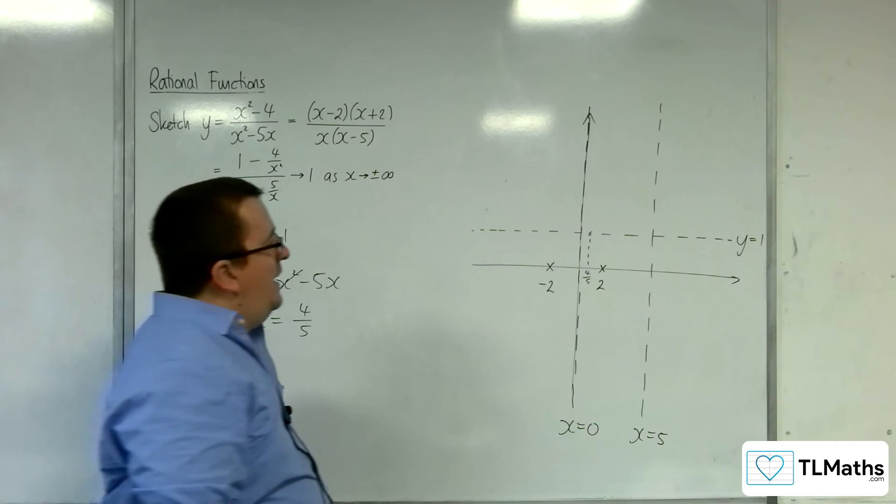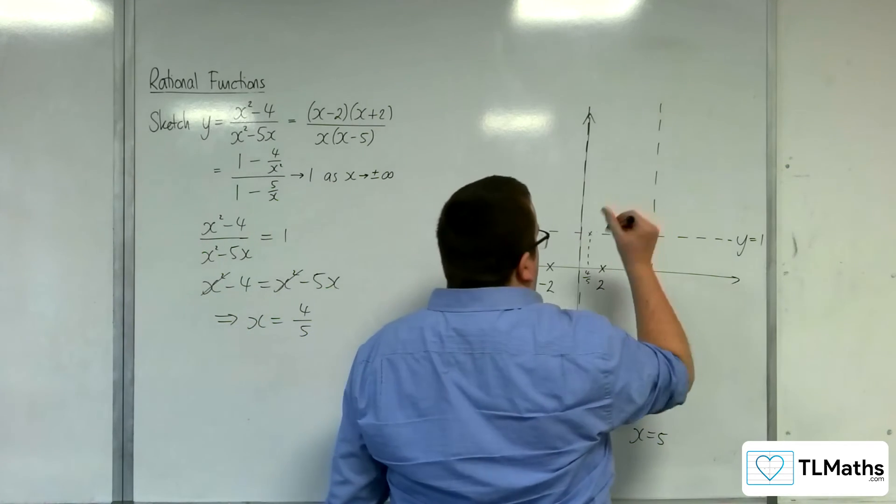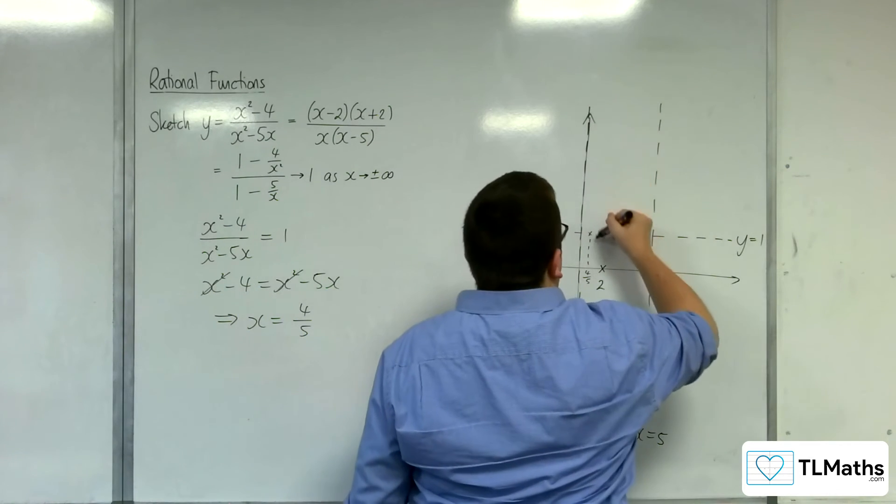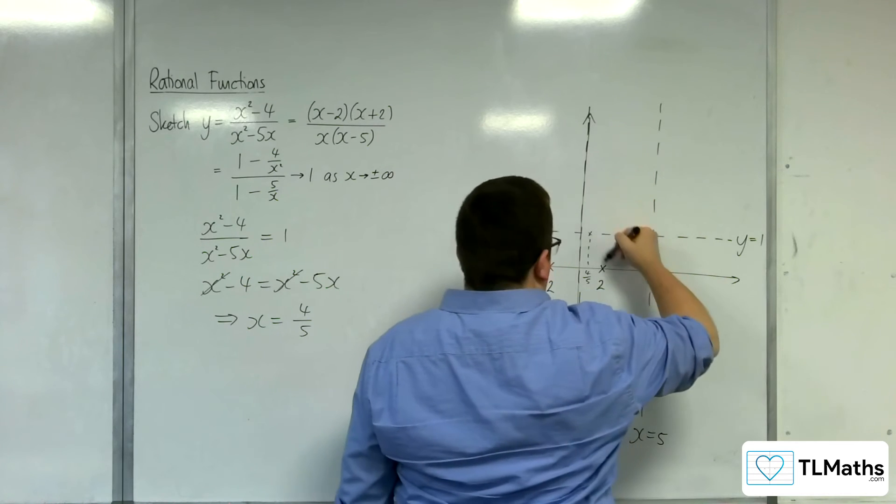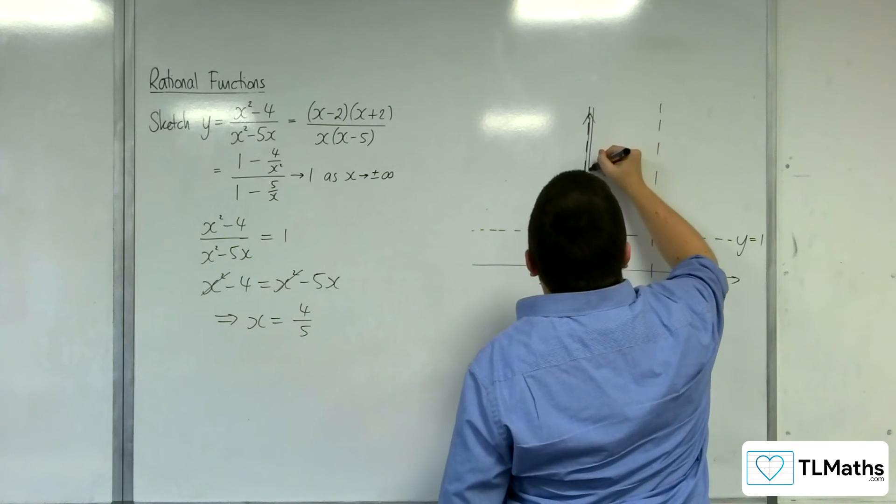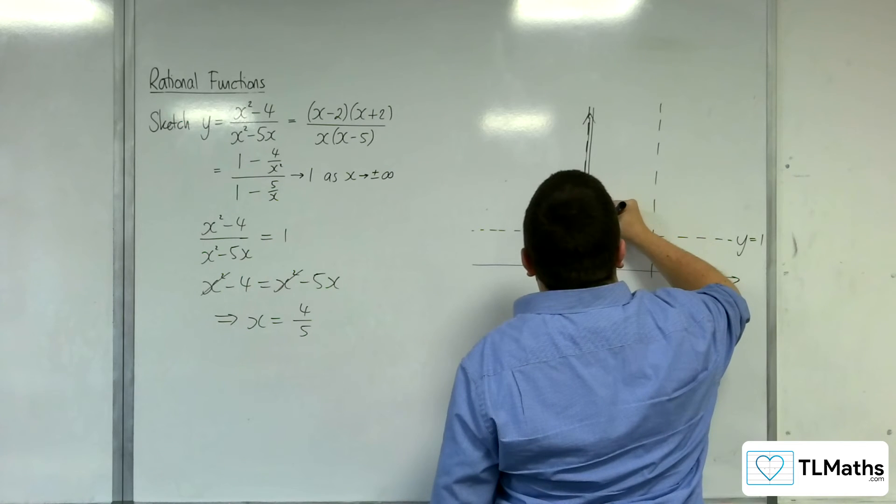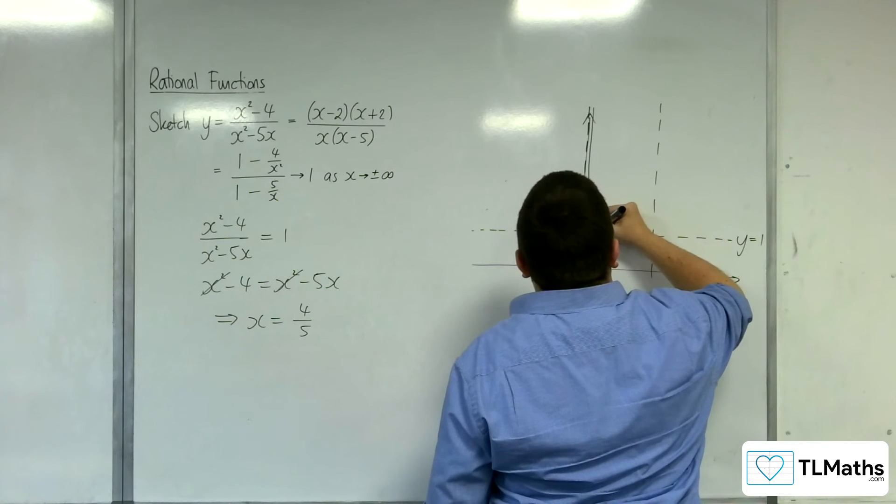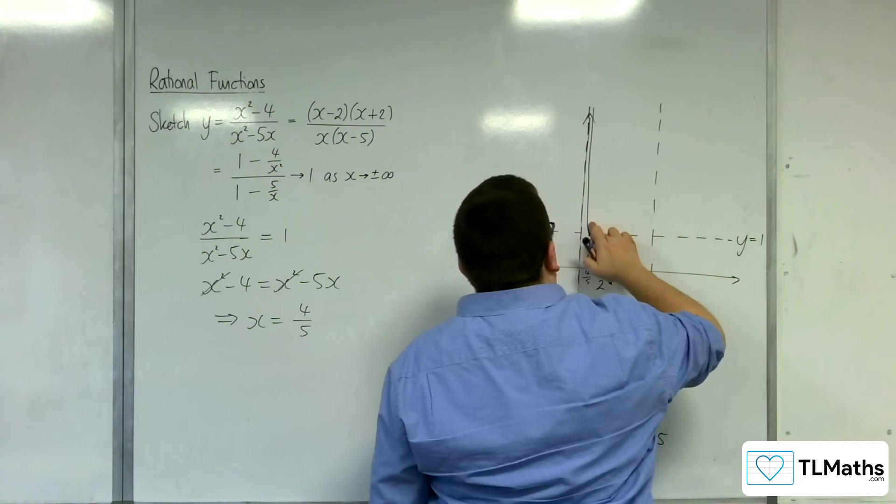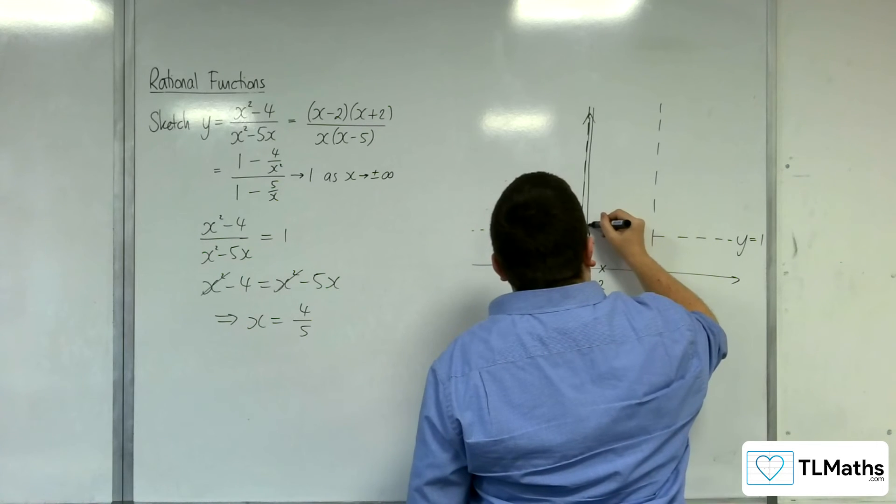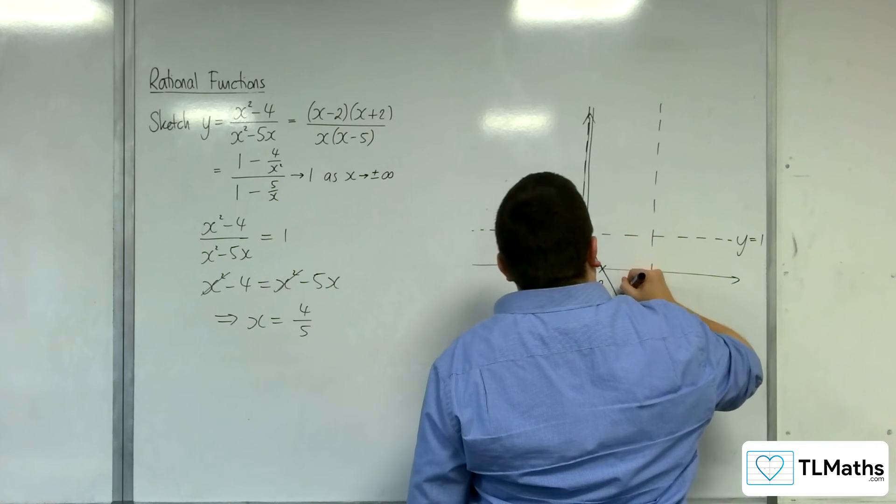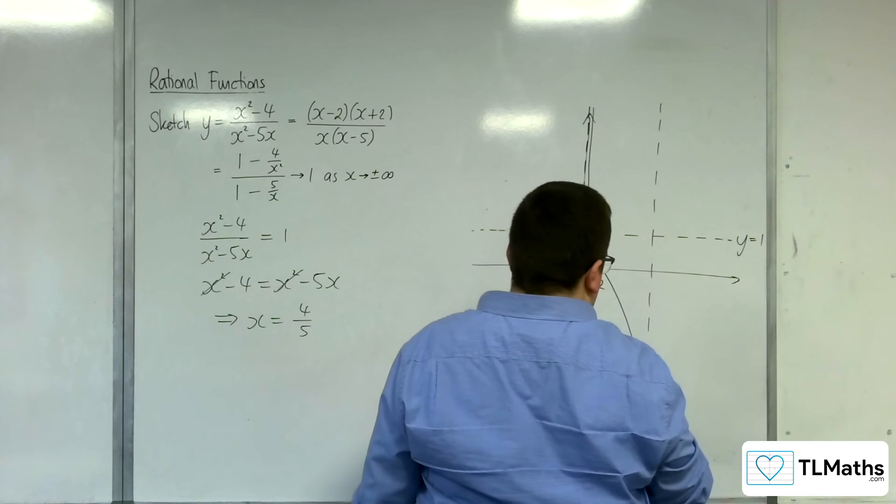So if that's the case, then that tells me that the curve must be coming down this way. So it must be coming down through 4 fifths. That's bad. Oh dear. 4 fifths through 2, and then tending towards the other asymptote.